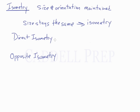In direct isometry, the orientation stays the same also. In opposite isometry, orientation is reversed.